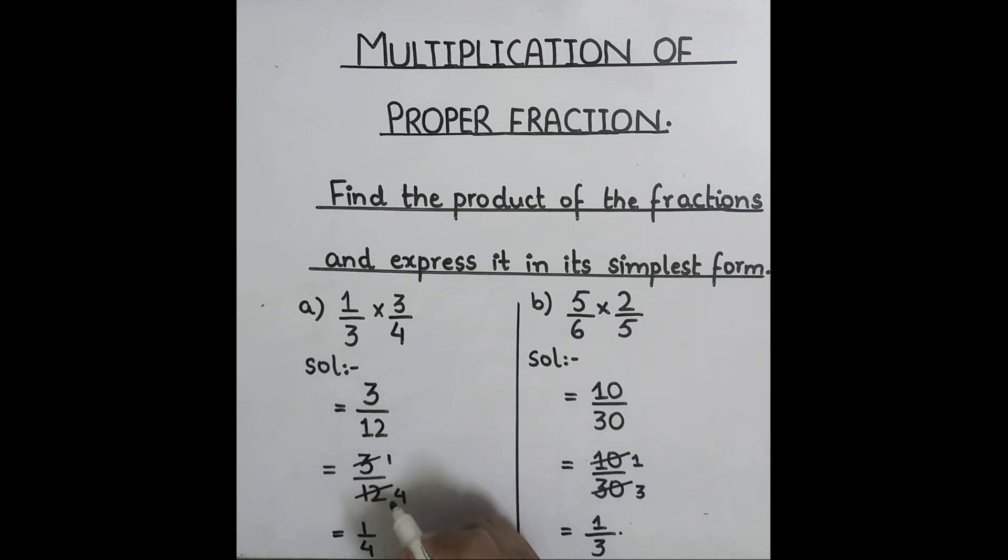While you are simplifying a fraction, make sure both numerator and denominator should be the multiple of the same table. Like three one times three and three four times twelve.